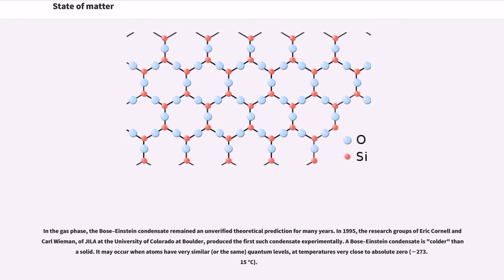A Bose-Einstein condensate is colder than a solid. It may occur when atoms have very similar, or the same, quantum levels, at temperatures very close to absolute zero, minus 273.15 degrees Celsius.